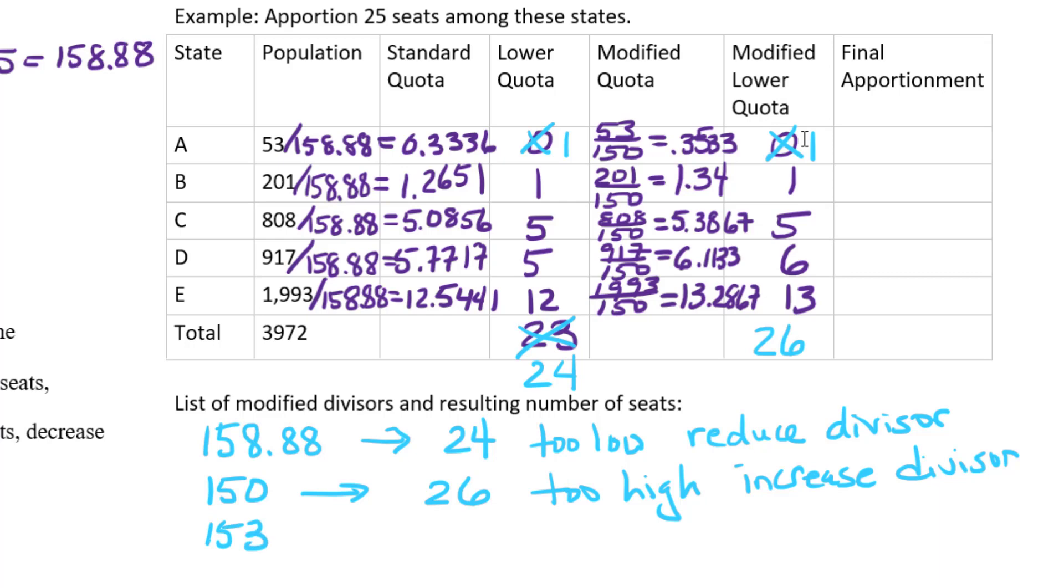Just a little bit bigger, and since I don't have a lot of space, I'm going to erase what I had for my modified quotas in the last step and start over, this time dividing by 153. This is going to give me 0.3464, 1.3137, and so on.